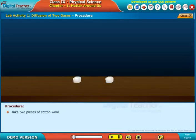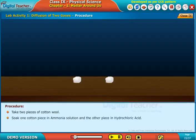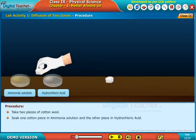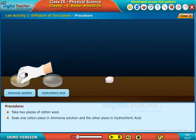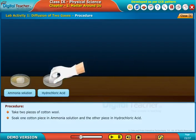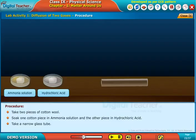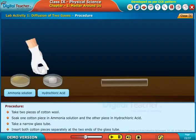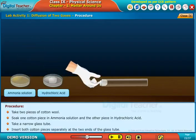Take two pieces of cotton wool. Soak one cotton piece in ammonia solution and the other piece in hydrochloric acid. Take a narrow glass tube. Insert both cotton pieces separately at the two ends of the glass tube.